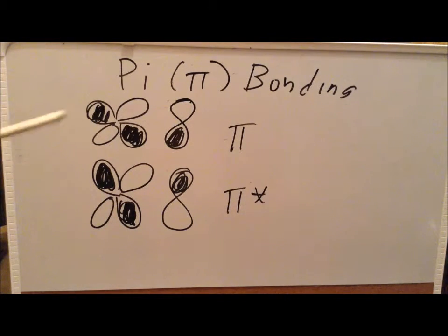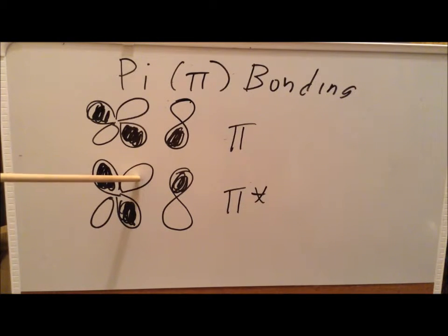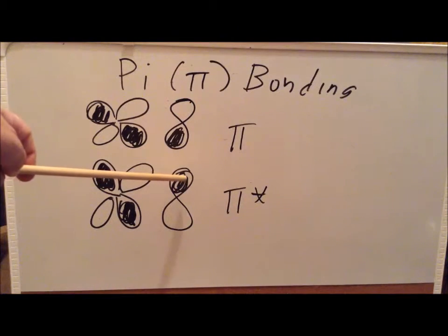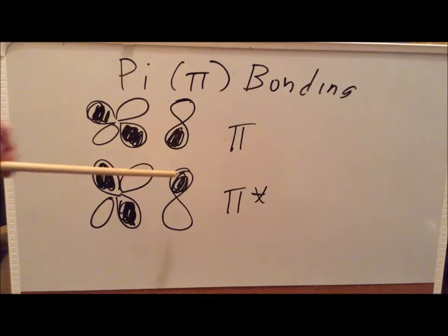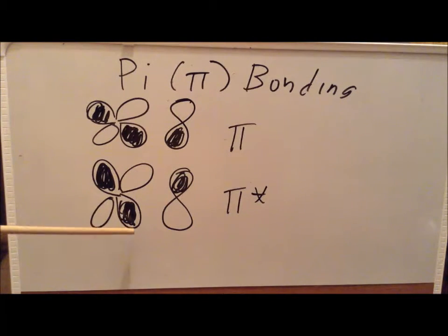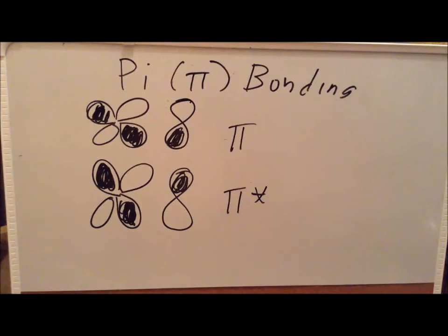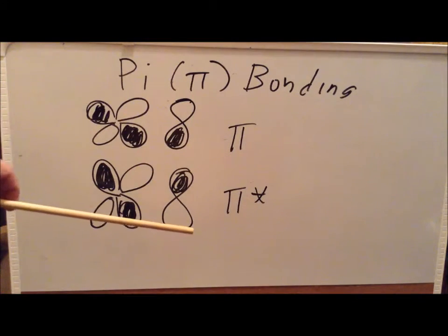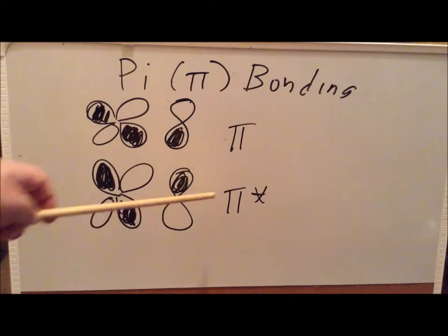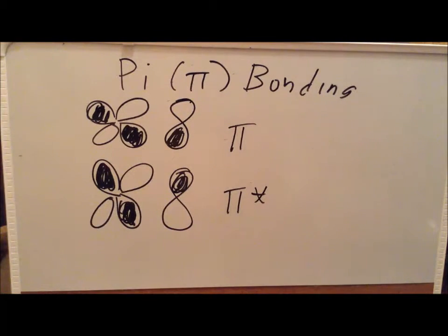On the other hand, we can also have a combination where the phase of the d-orbital is positive but the p-orbital phase is negative, giving an antibonding combination at the top. Since the phases at the bottom are also opposite, that's also an antibonding combination. With antibonding at the top and antibonding at the bottom, we get overall a pi antibonding interaction.